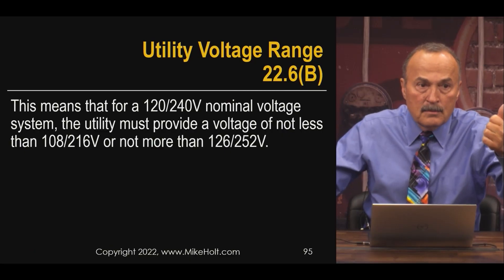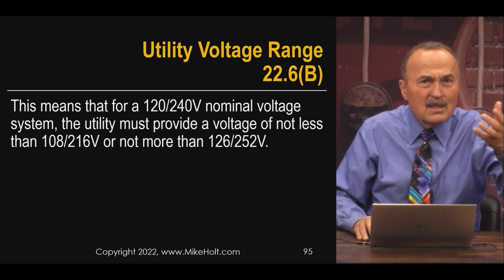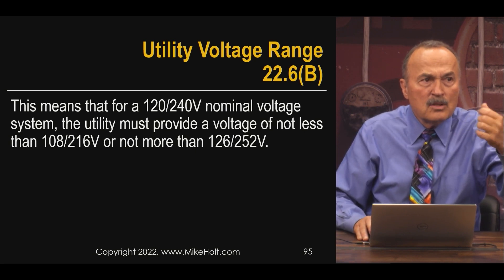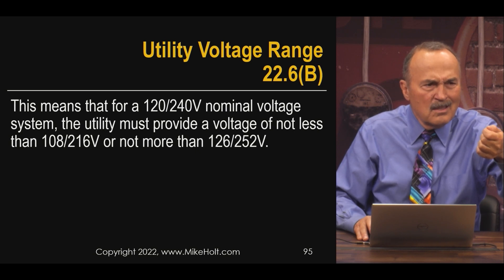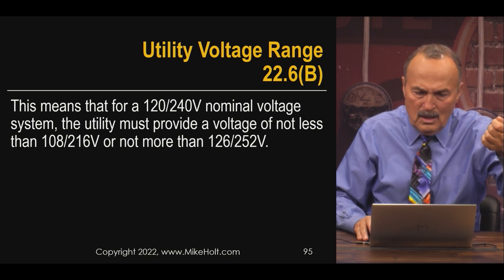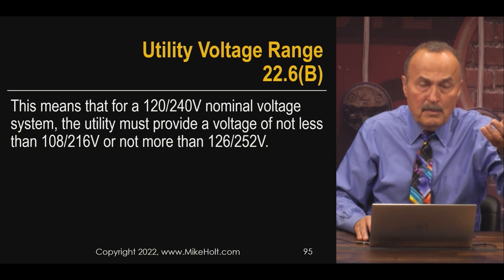We have utility voltages today at the premises — not the distribution voltage. The premises is going to be plus 5%, which it always was; that's an ANSI standard. No more than 10% voltage drop — so plus 5% or minus 10%. I'm saying this because you might put a voltmeter somewhere and see only 216 volts.